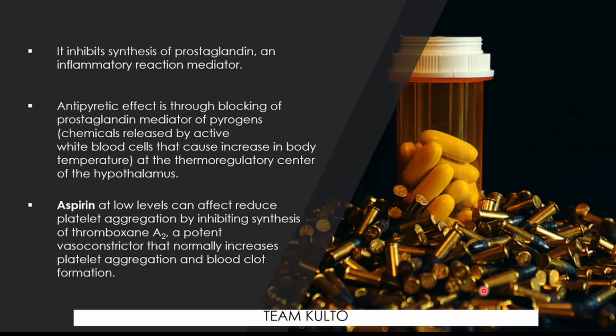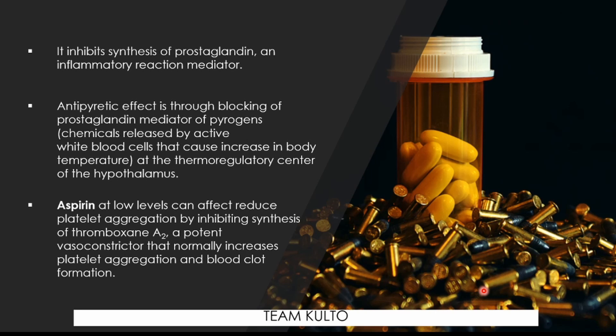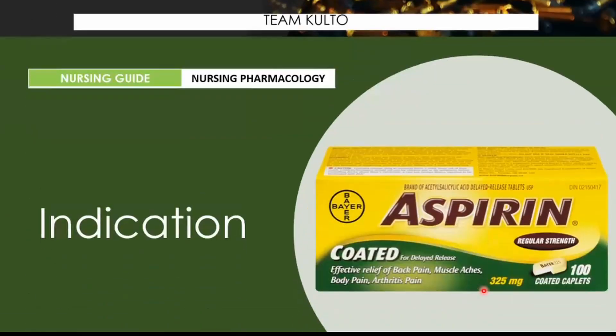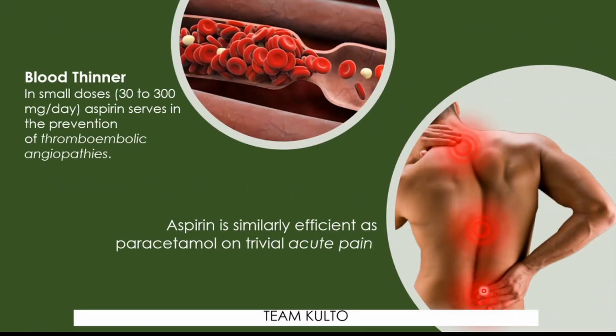At higher levels, aspirin inhibits the synthesis of prostacycline, a vasodilator that inhibits platelet aggregation. The two main indications for aspirin are: as a blood thinner and for acute pain.